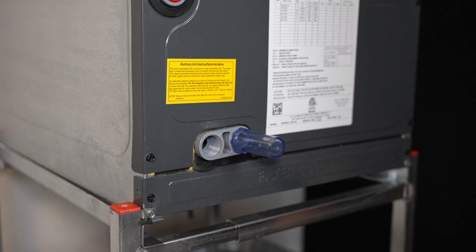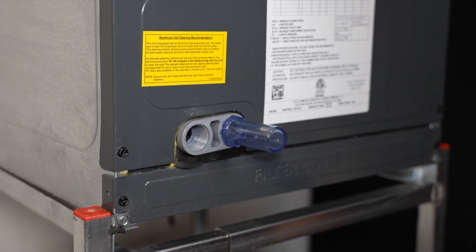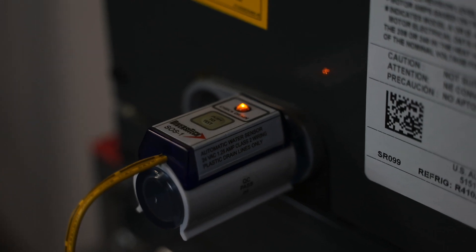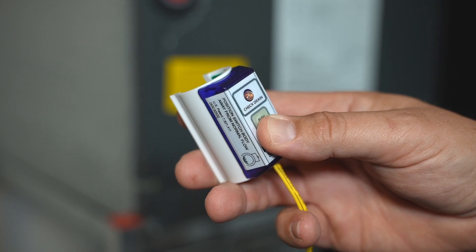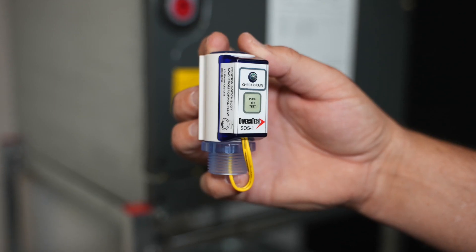The clear adapter provides an easy view of the primary pan condition. The LED illuminates when the condensate line is blocked. The switch works with non-communicating systems and is made for standard drain lines.